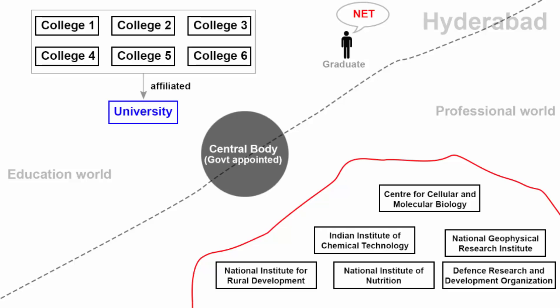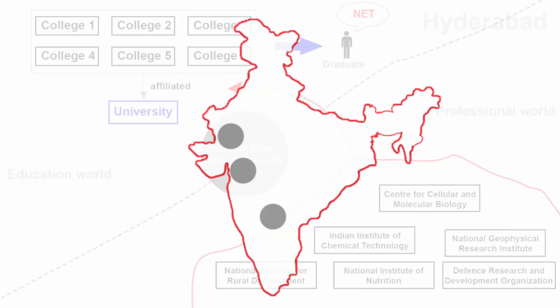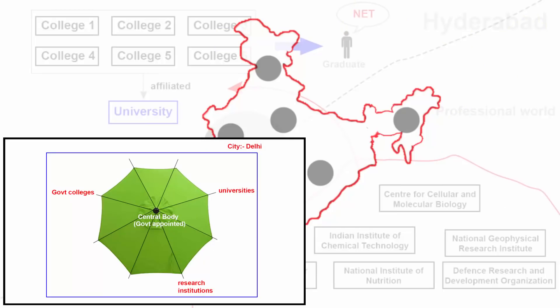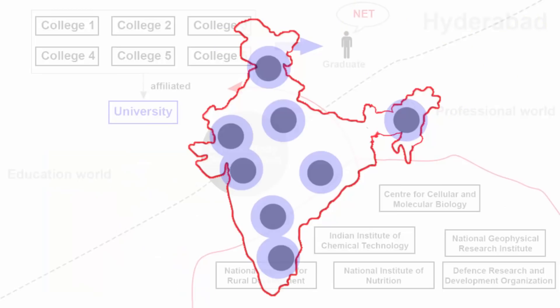Just imagine if there was a central body that could be a link between these organizations and colleges and universities. A lot of information could be transferred from one side to another, and many students would benefit from knowing what these institutions require and how they operate. If the government establishes such institutions in different corners of the country and introduces the same umbrella model, it will create small knowledge hubs all across the country, benefiting not only those regional areas but the entire nation as a whole.